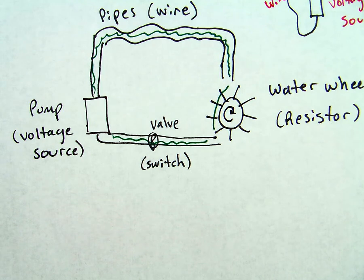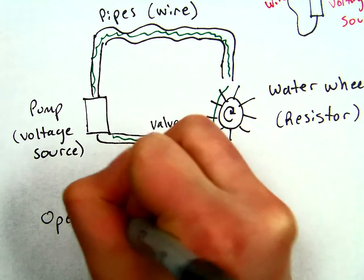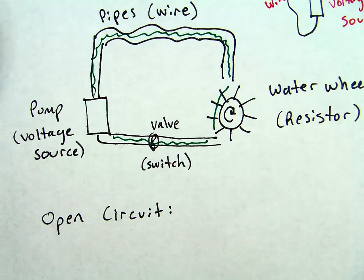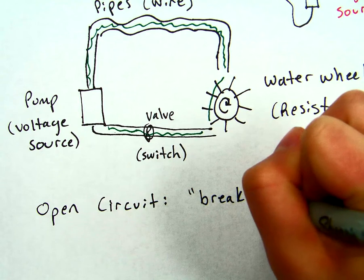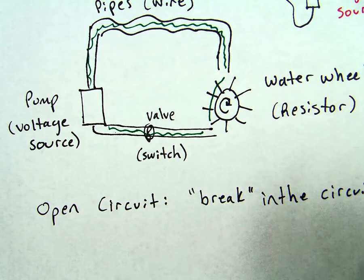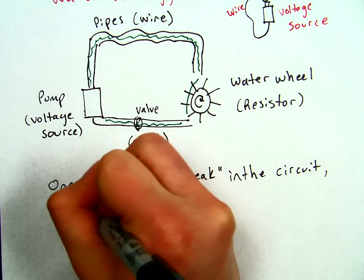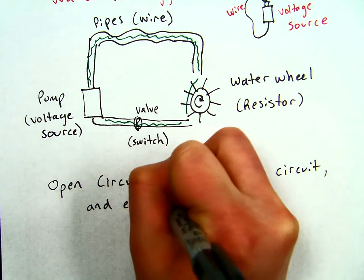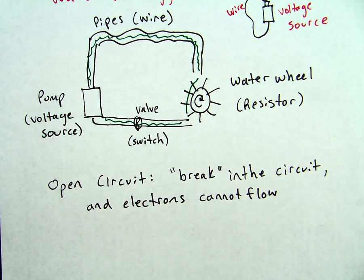And the reason we like switches is because it brings us to something called open and closed circuits. An open circuit is actually a broken circuit. Somewhere along the line, there's a break in the circuit. So there's a break in the circuit and electrons cannot flow. This is what we call an open circuit. This is when your lights are off, your blender is not blending, your toaster is not heating up your toast.